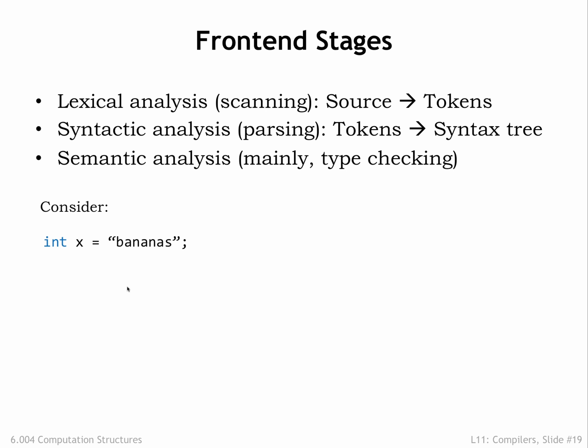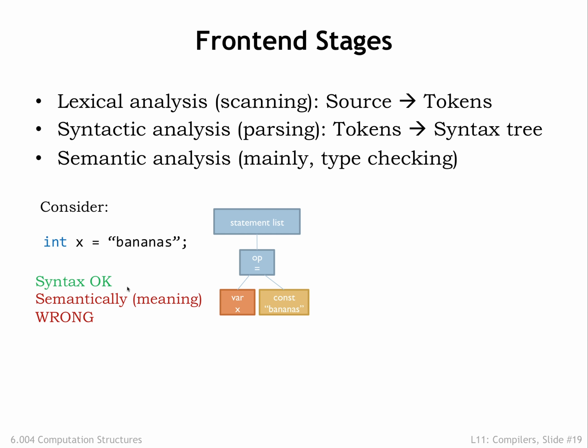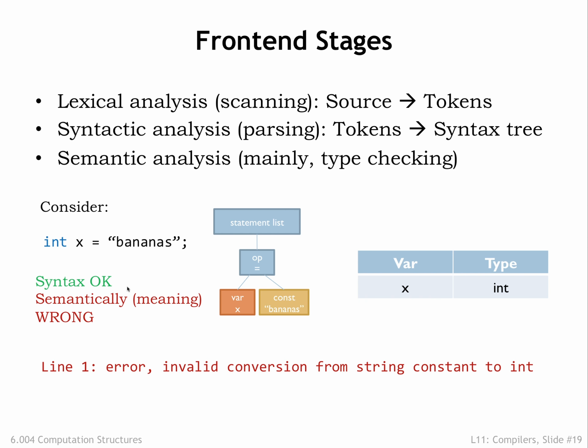The syntax tree makes it easy to verify that the program is semantically correct, e.g., to check that the types of the operands are compatible with the requested operation. For example, consider the statement x equals the string 'bananas'. The syntax of the assignment operation is correct — there's a variable on the left-hand side and an expression on the right-hand side — but the semantics is not correct, at least in C. By looking in its symbol table to check the declared type for the variable x and comparing it to the type of the expression, the semantic checker will detect that the types are not compatible: we can't store a string value into an integer variable.